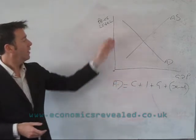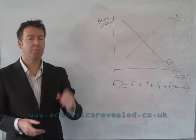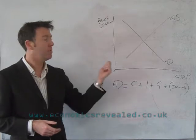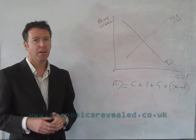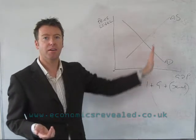Now I've done two simple curves here, an AD and an AS. There is some debate amongst economists about the shape of an aggregate supply curve. Some economists will argue that it should be straight up and vertical.